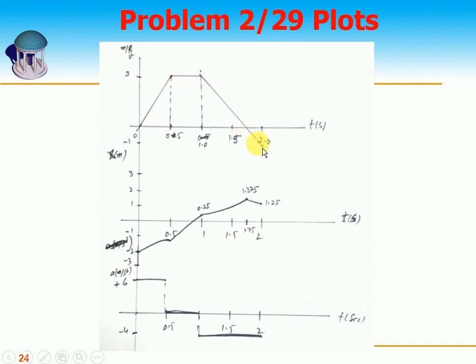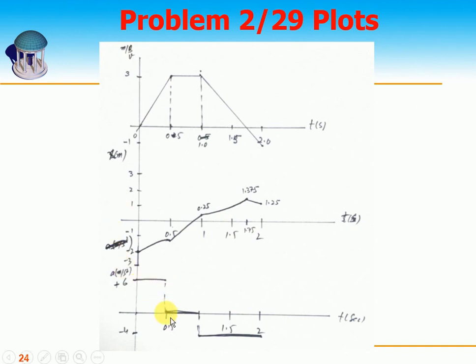Now we plot the results. The displacement plot starts as a curve (quadratic) in the first part, then a straight line, rises to 1.375 meters and returns to 1.25 — moving upward then coming downward. For the acceleration plot: from 0 to 0.5 seconds it is a constant 6 m/s², then drops to 0 from 0.5 to 1 second, then a constant minus 4 m/s² from 1 to 2 seconds.